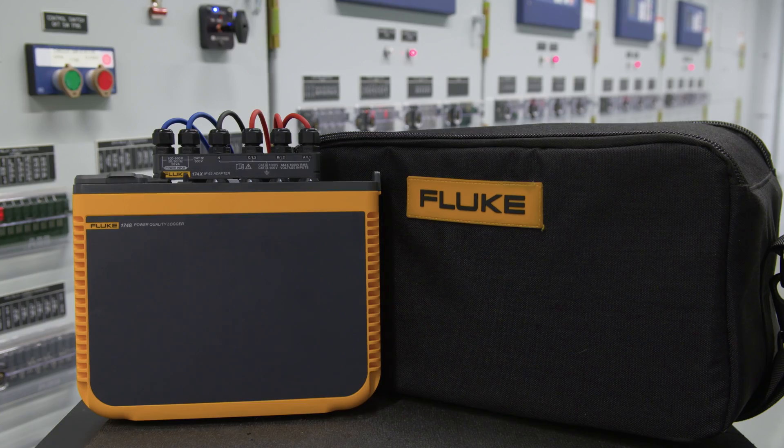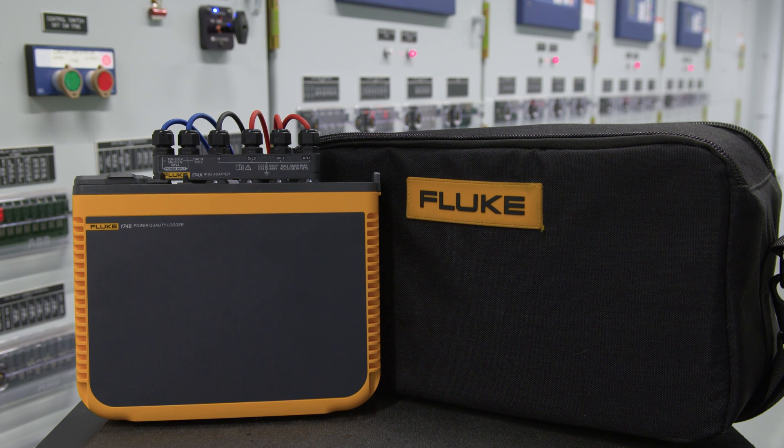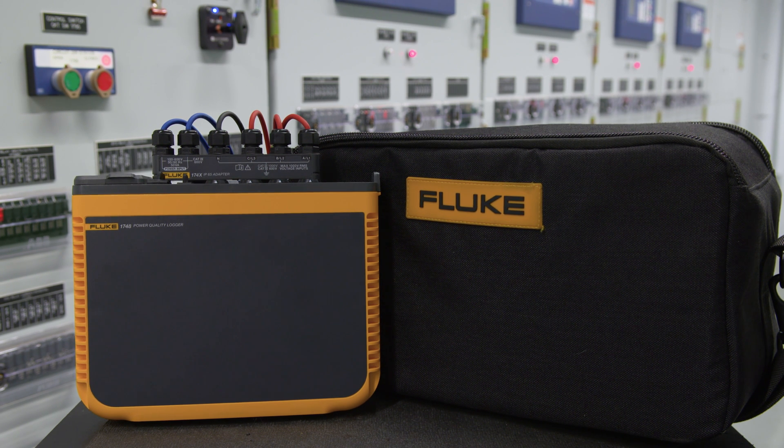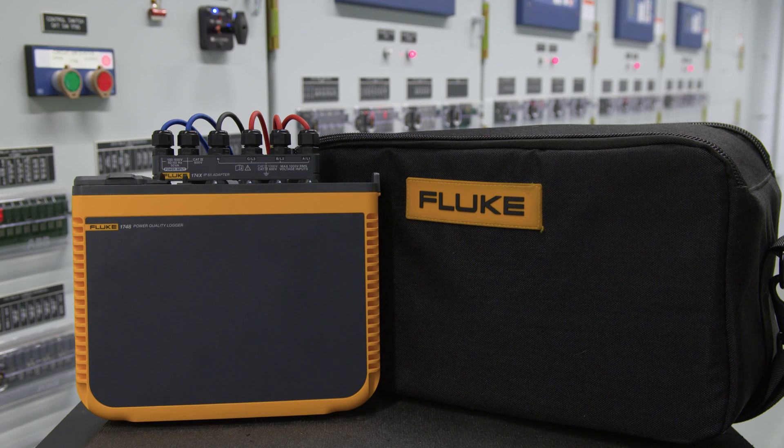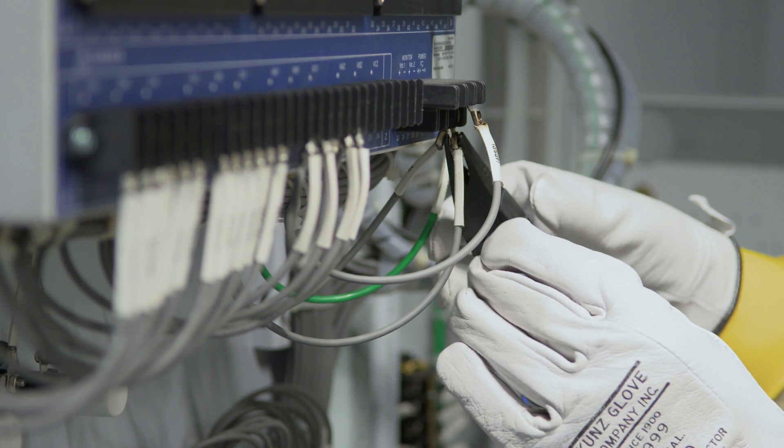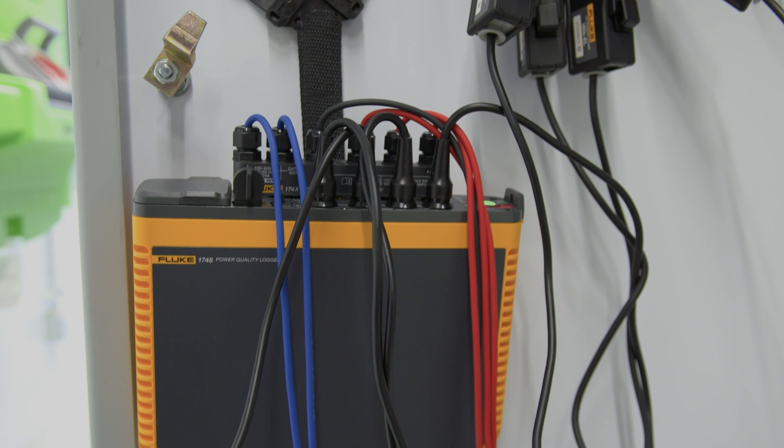With its small footprint, the 1740 series is designed to fit into tight spaces and panels. It can even be powered directly from the measured line, which is critical for installations where there is no power outlet available.